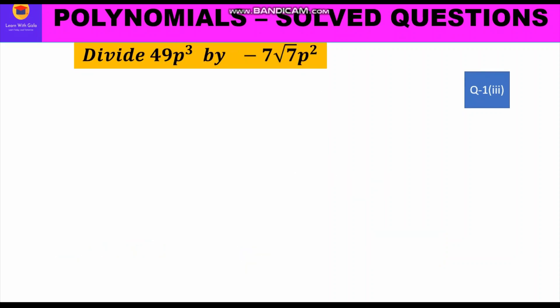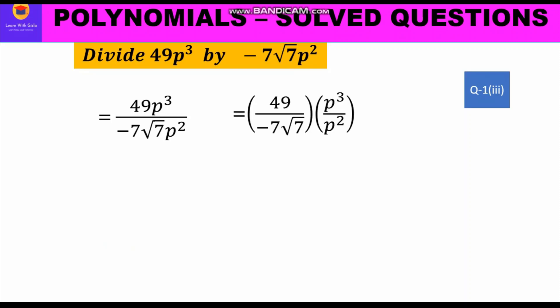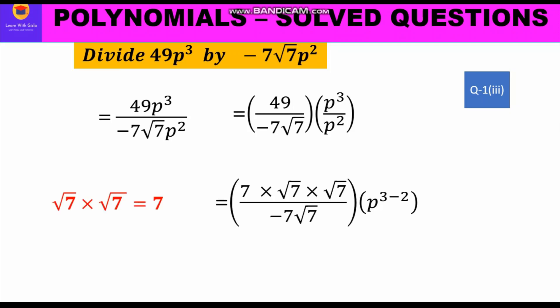Now let us take up the third part. It is given: divide 49p cube by -7 into √7 p square. We write 49p cube upon -7 into √7 p square. Separating the coefficient from the variable part, we write 49 upon -7√7 into p cube upon p square.